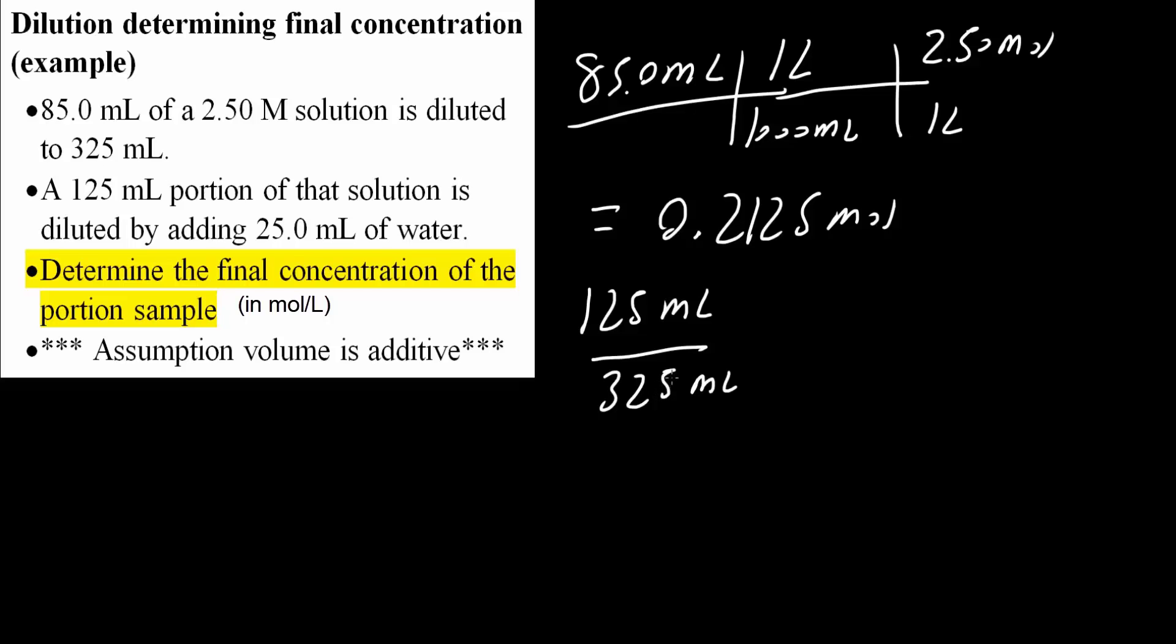By doing so our moles will change. So we will multiply by 0.2125 moles. This gives us 0.0817 moles. So 0.0817 moles would be in our 125 mL portion.